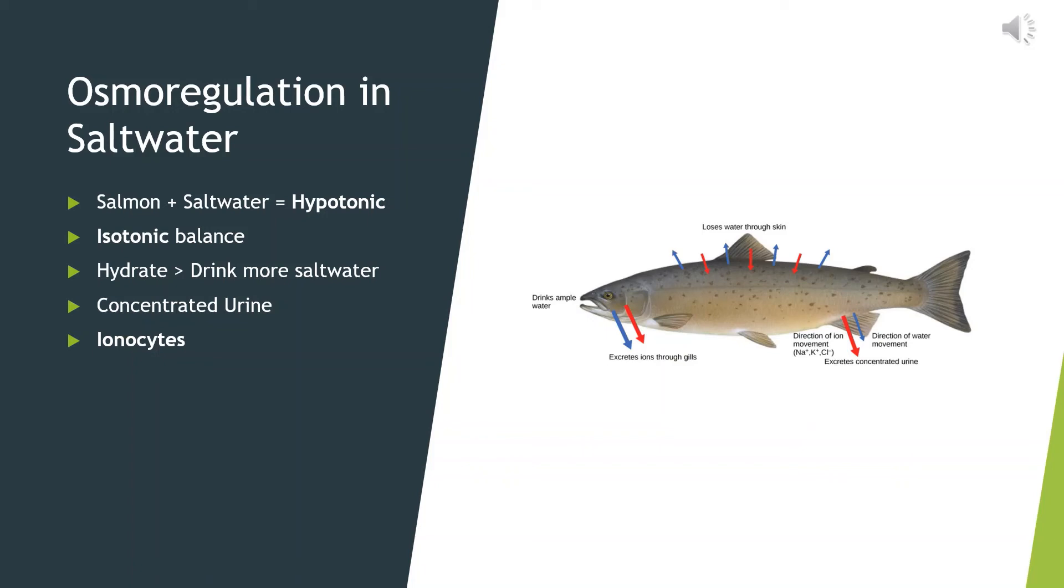For the salmon, they stay hydrated while in saltwater by absorbing more saltwater. However, the salmon must filter out the salt to avoid negative effects. This is possible due to their kidneys' ability to create concentrated urine. This allows them to excrete substantial amounts of salt with minimal amounts of water.